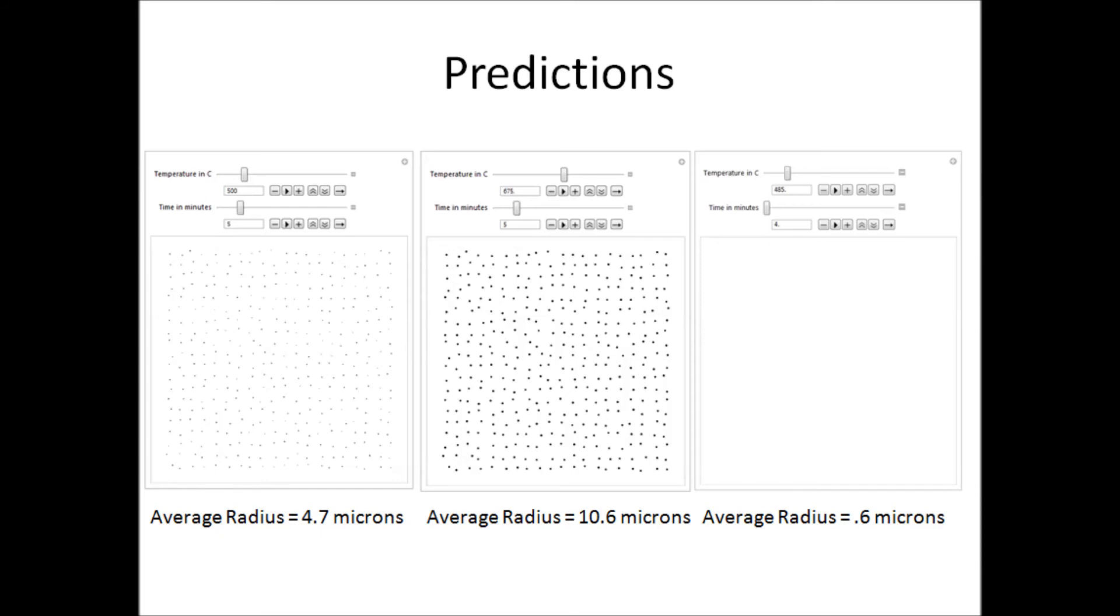Here are three different predictions based on the model. The first has the same condition that the image used for the calculations had, 500 Celsius and a 5 minute growth time. It has an average radius of 4.7 microns, which is approximately equal to the average radius from the actual image. The middle image shows a temperature increase to 675 Celsius with the same 5 minute growth time, and gives an average radius of 10.6 microns.